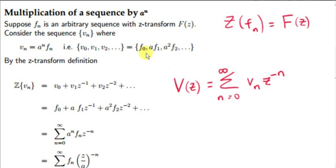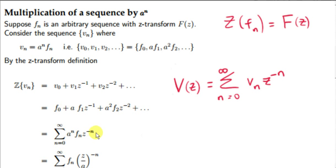We can now write v explicitly as the product of the geometric sequence and the arbitrary sequence f sub n. So v sub 0 is just f sub 0, and v sub 1 is a times f sub 1, and so on. In summation notation, when n is 0, we get a to the 0 — which is 1 — times f sub 0, times z to the 0 — which is also 1 — giving just f sub 0. When n is 1, we get a times f sub 1 times z to the minus 1, which checks out.